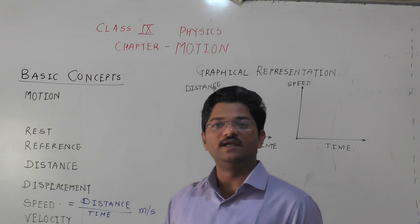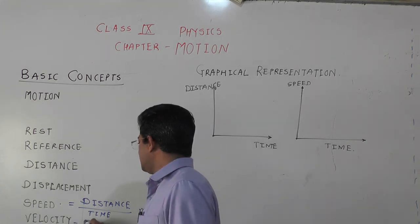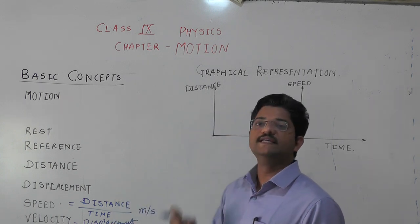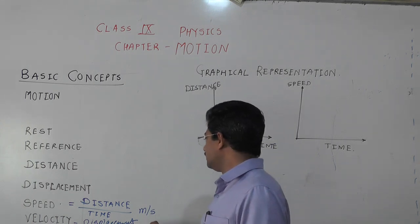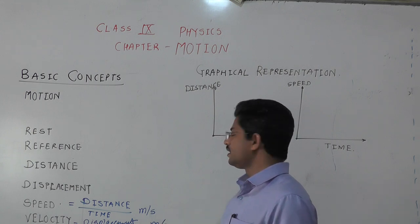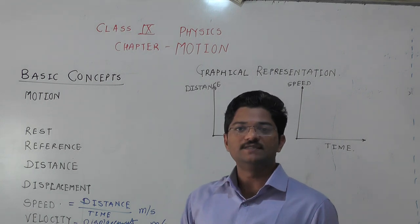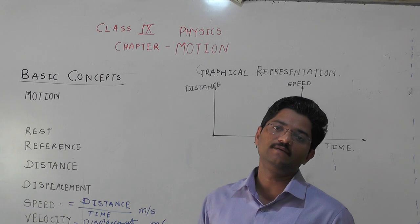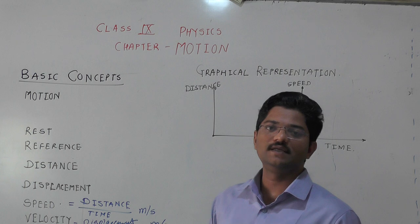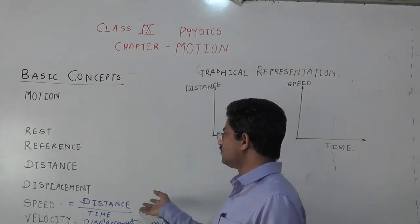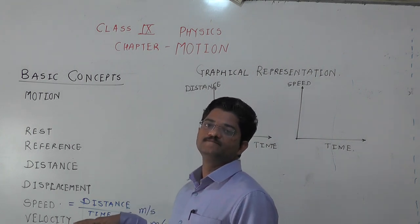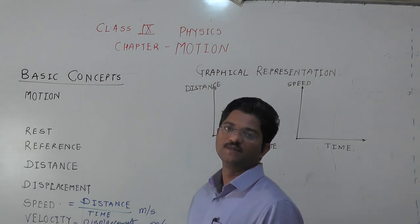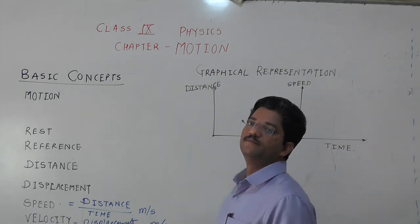Then comes another quantity called velocity. Velocity is the rate of change of displacement, defined as displacement divided by time. Both distance and displacement are measured in meters, and time in seconds, so velocity is also measured in meter per second. Speed and velocity are both derived quantities, which depend on distance and time, or displacement and time respectively. These are derived from the fundamental quantities: length, time, and mass.